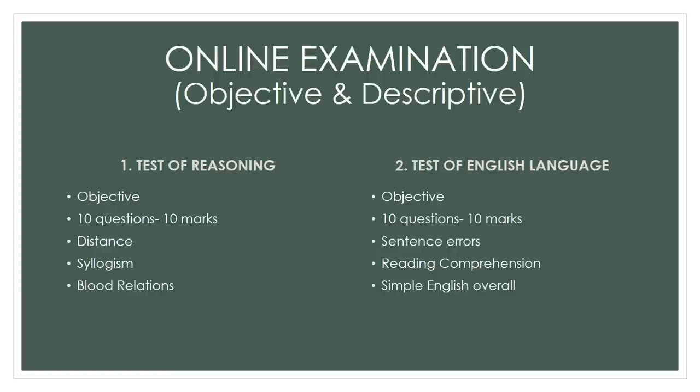Coming to the first test of reasoning and English language — both sections had questions on the easier side this time. In reasoning, questions were from distance, syllogism, sitting arrangement, blood relations, and number series. In English language, you have questions from sentence errors, reading comprehension, active-passive voice, and spelling errors. So overall, simple English was asked.